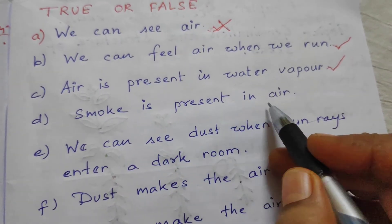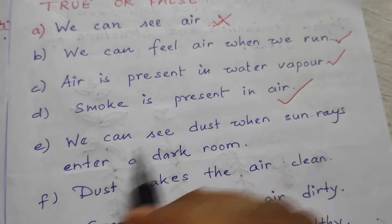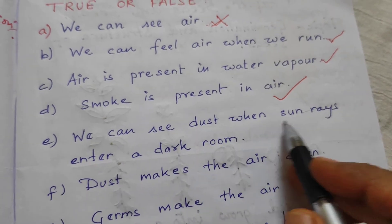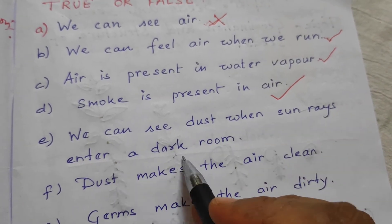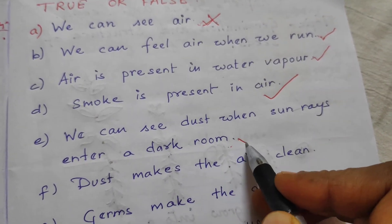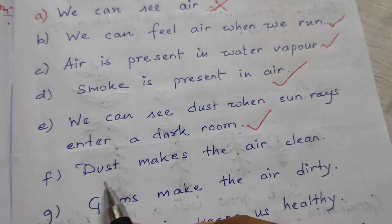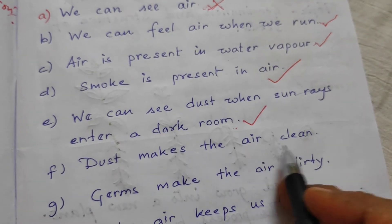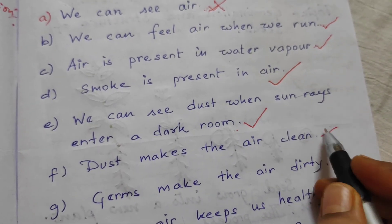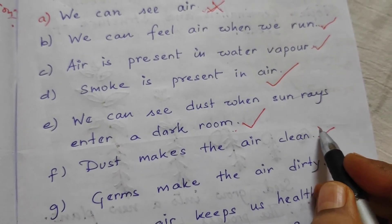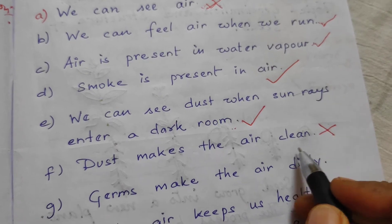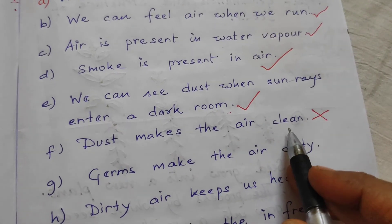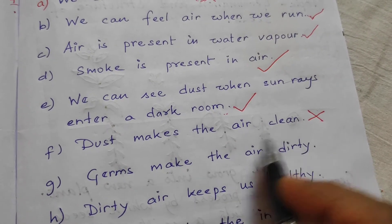Number D: Smoke is present in water? Yes. Number E: We can see dust when sun rays enter a dark room? It is also correct. Number F: Dust makes the air clean? No — dust does not make the air clean; it even makes the air dirty.